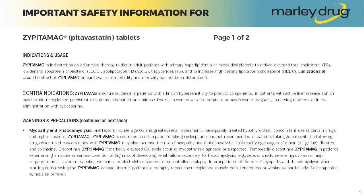Temporarily discontinue Zipitamag in patients experiencing an acute or serious condition at high risk of developing renal failure secondary to rhabdomyolysis, such as sepsis, shock, severe hypovolemia, major surgery, trauma, severe metabolic, endocrine, or electrolyte disorders, or uncontrolled epilepsy. Inform patients of the risk of myopathy and rhabdomyolysis when starting or increasing Zipitamag dosage. Instruct patients to promptly report any unexplained muscle pain, tenderness, or weakness, particularly if accompanied by malaise or fever.